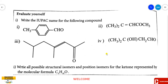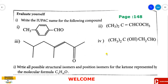Hello students, welcome to my chemistry classes. In this presentation we are going to discuss Plus Two Chemistry Unit 12, carbonyl compounds and carboxylic acids. We will write the IUPAC name for the following compounds. In the previous video we discussed the nomenclature of carbonyl compounds, that is aldehydes and ketones.